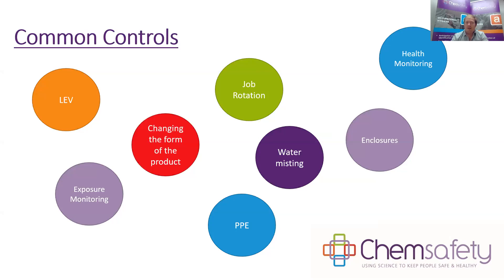Some common controls we see include local source ventilation — extraction happening at the source. Any control happening at the source is more effective than controls at the pathway between source and person, which in turn is more effective than controls at the person. If we can contain it at the start, it won't get to us personally. Job rotation is another: if a process is hazardous but you get recovery time between shifts, the body naturally reduces exposure levels. Rather than one person doing that hazardous job all day every day, you rotate among 10 or 12 people, doing it only every half-day or every week, reducing overall harm. It's suitable for some substances and not others.